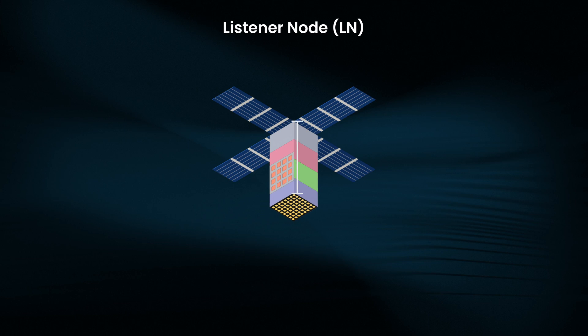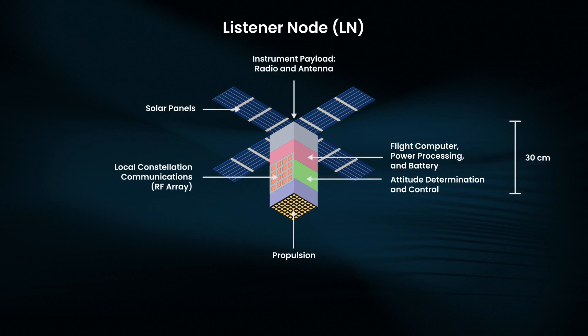The GOLO constellation will have a hierarchical architecture consisting of many small listener nodes and a smaller number of larger communication and computation nodes. The listener nodes are small, relatively simple 3U cubesats. Their size is roughly like a loaf of bread.